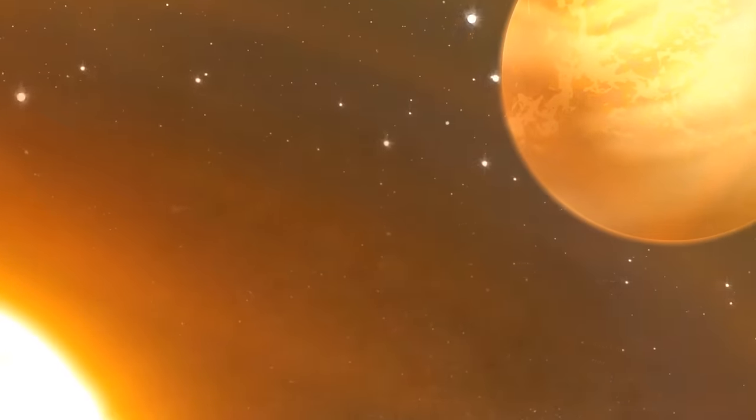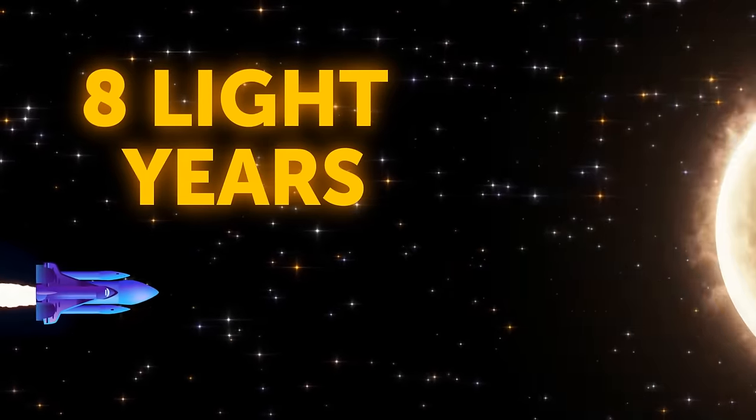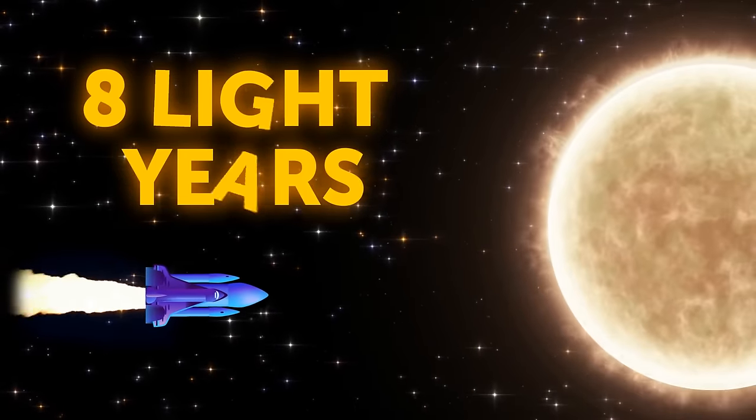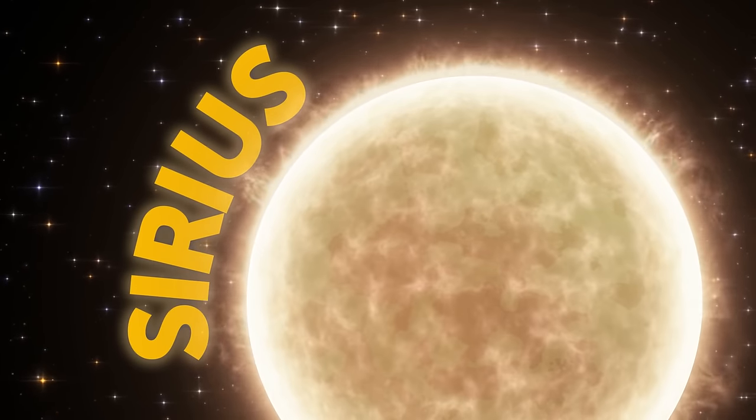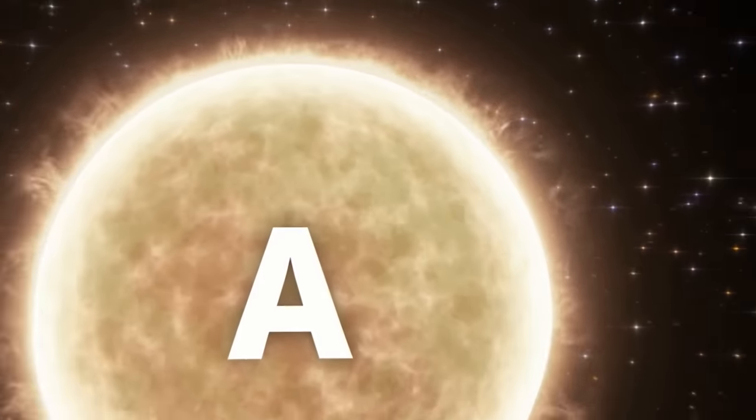But the message from Voyager reporting this event came to Earth almost a year later because of the huge distance. It took 35 years for Voyager 1 to travel all this way. And here it is. The probe is as long as a car and weighs like two motorcycles.